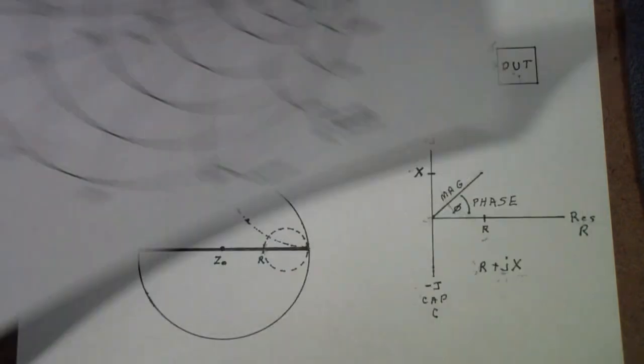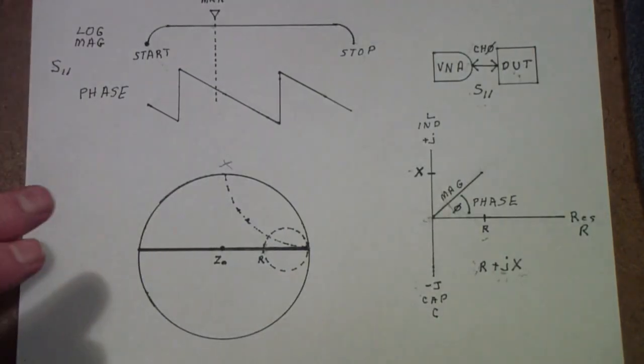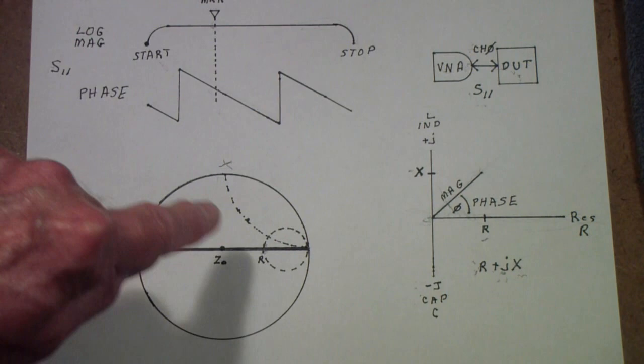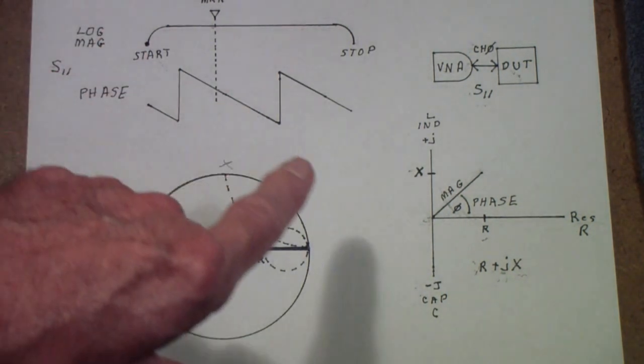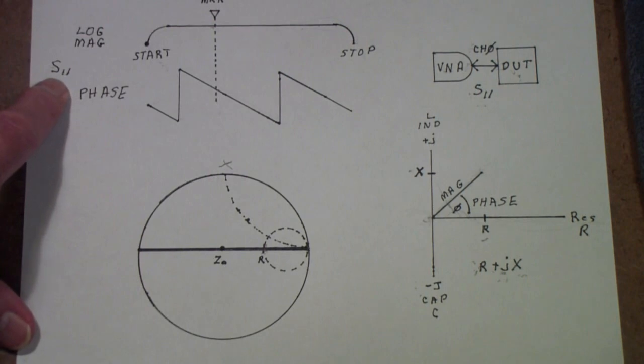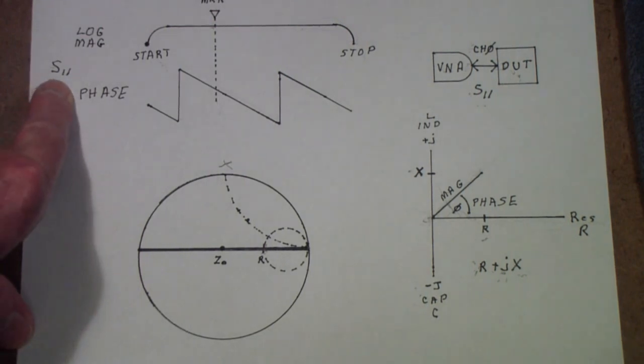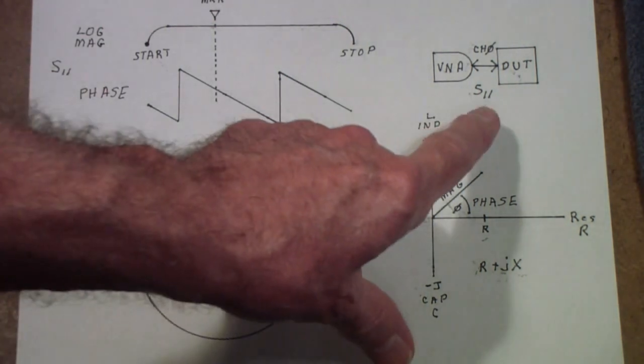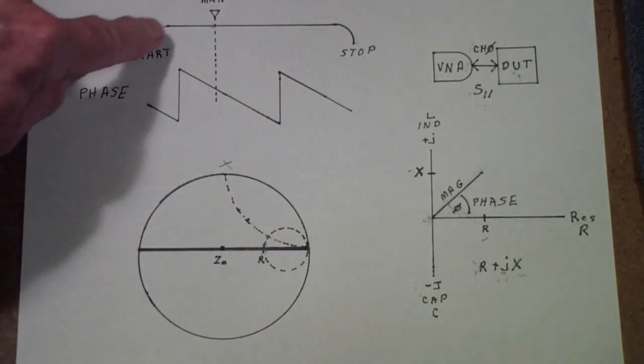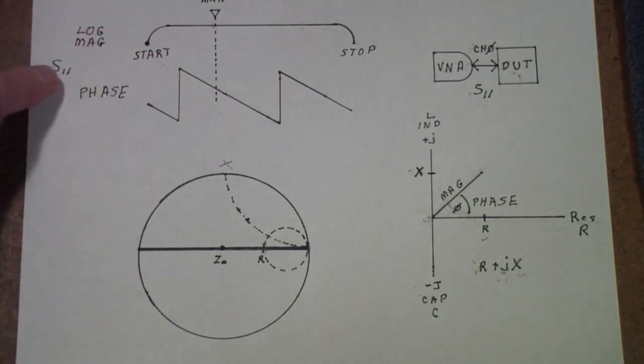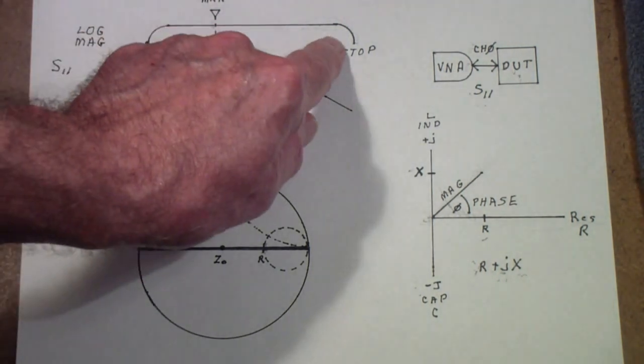So, if when you're working with a Smith chart, you just remember that it is a plot of magnitude and phase for a signal, if you're using channel 0 of, say, the nano VNA, you're measuring S11, all you are plotting on this chart are the different values of magnitude and phase for S11 that vary with the frequency.